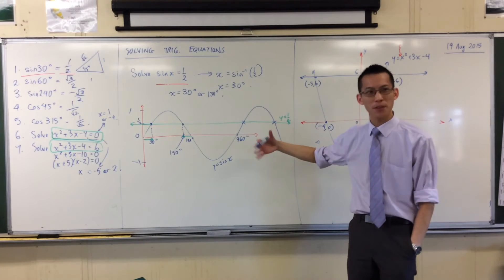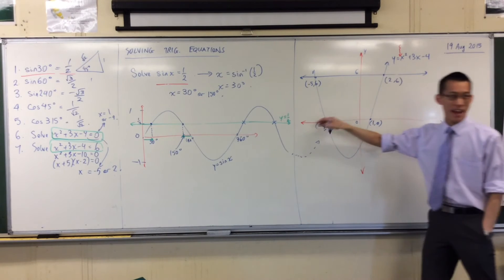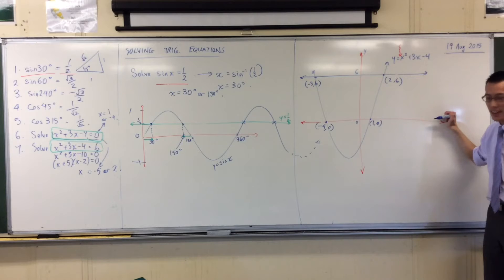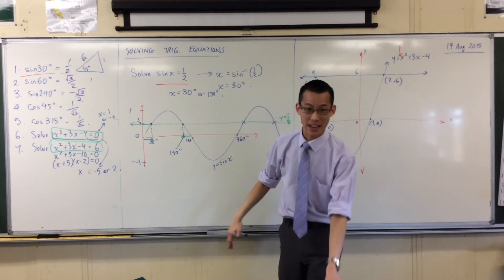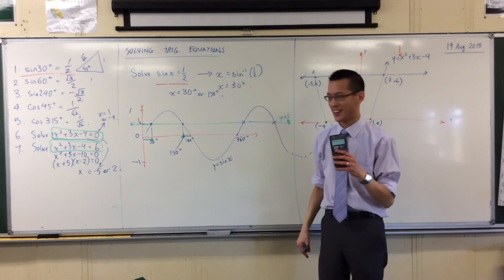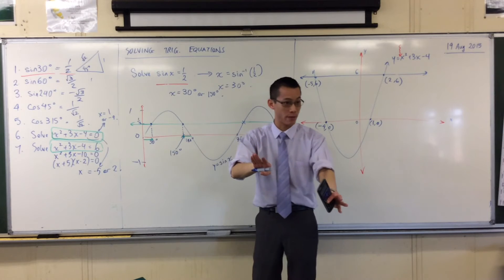And then if you keep on thinking, there's not four solutions. There's going to be six, and then eight, and then ten. In fact, there's an infinite number of solutions here. That's why your calculator kind of panics and says, I'll just give you the first one. And then you can work out the rest.